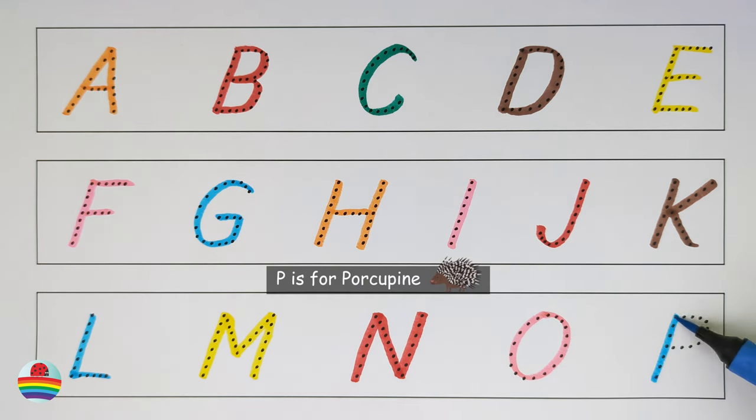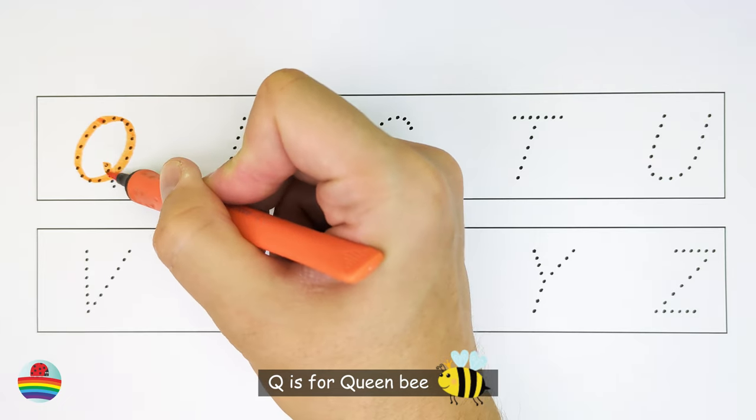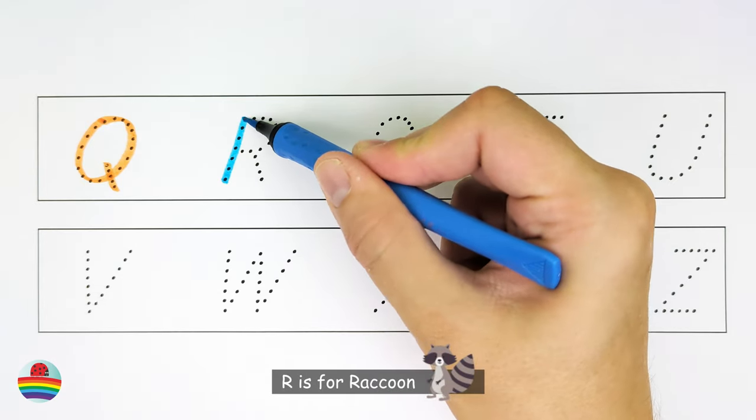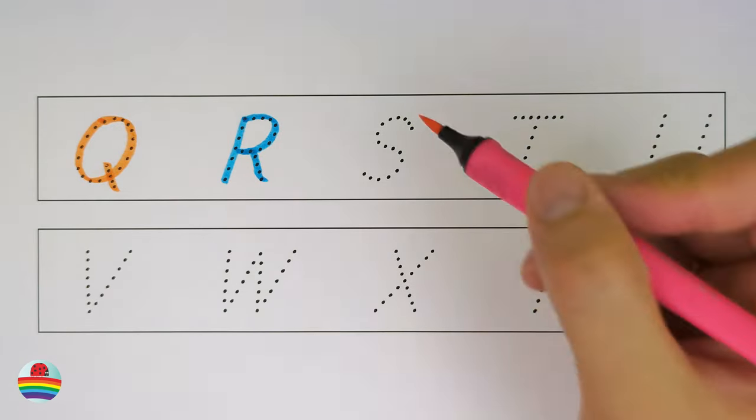P. P is for porcupine. Q. Q is for queen bee. R. R is for raccoon.